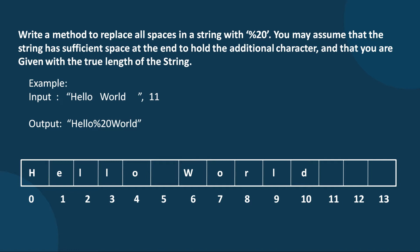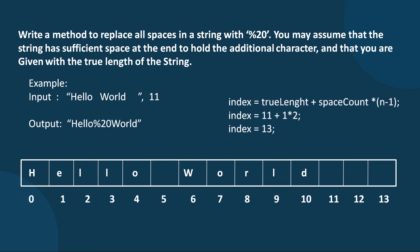Next, we identify the new index required to hold the updated string. The formula is: true length plus (space count multiplied by 2). We multiply by 2 because '%20' adds 3 characters per space, so that's n minus 1, which equals 2. In this example, the new index value comes out to 13.